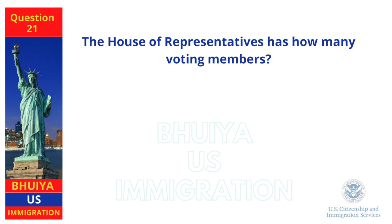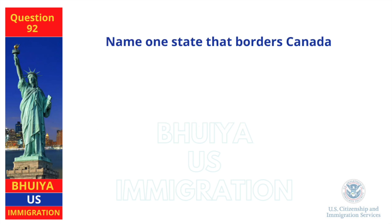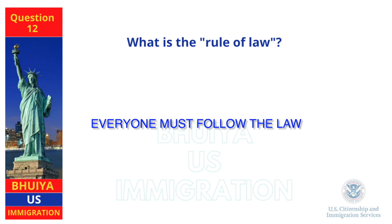The House of Representatives has how many voting members? 435. Name one state that borders Canada. New York. What is the rule of law? Everyone must follow the law.